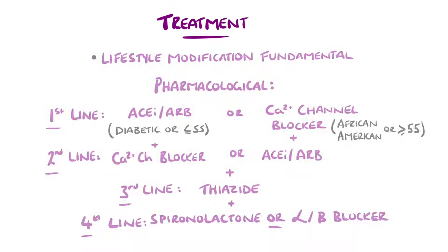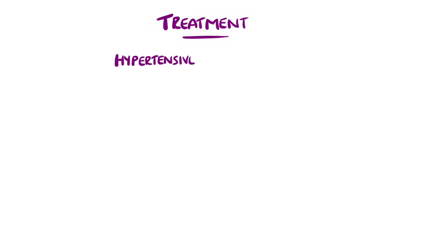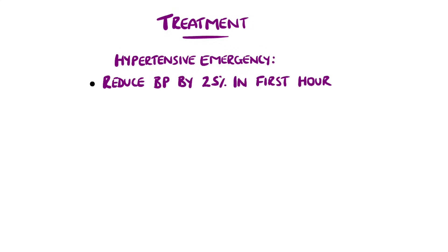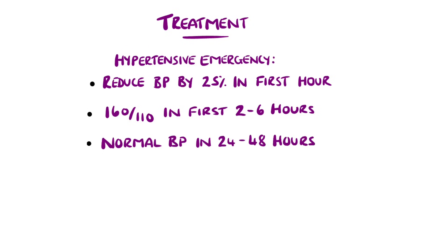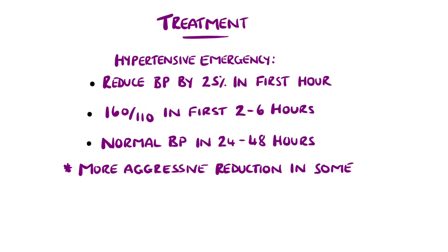In the case of a hypertensive emergency, the general aim is to lower the blood pressure by around 25% in the first hour, and further to 160 over 110 over the next two to six hours. Normal blood pressure is targeted over the following 24 to 48 hours. In some cases the blood pressure may be reduced faster, such as in an aortic dissection.